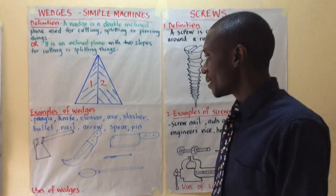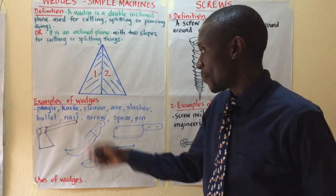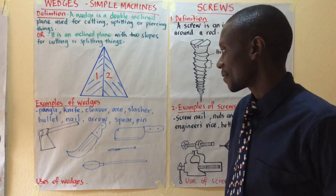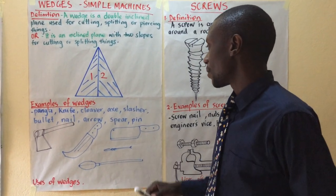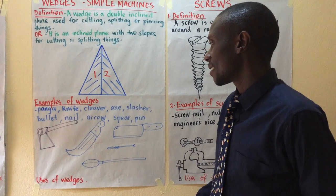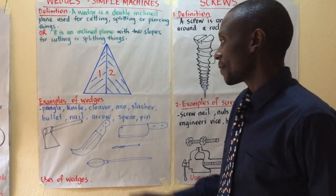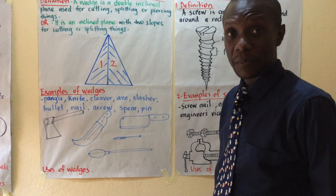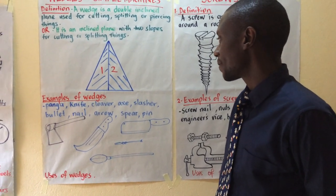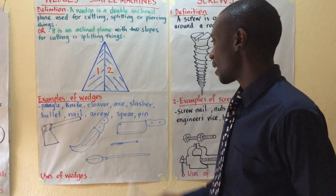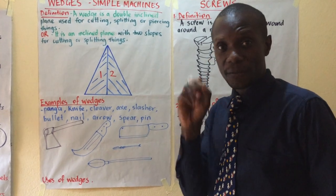Examples of wedges used for cutting or splitting: we have got a panga, knife, cleaver, axe, and slasher.